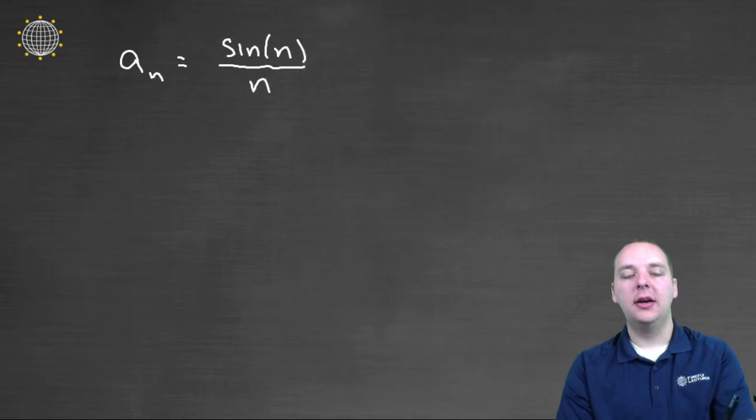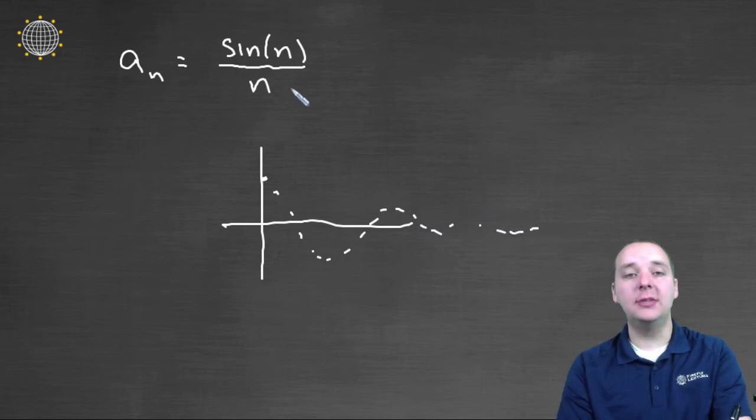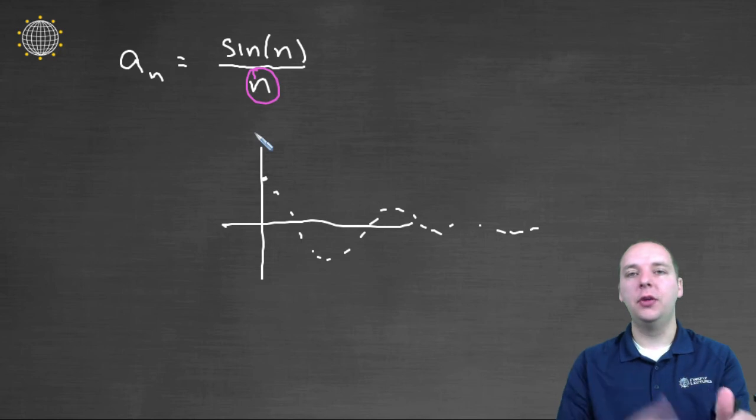If you looked at a graph of this guy, my graph obviously isn't going to be as good as the calculator's, but it basically looks like this. It looks like the sine curve that tapers off to zero. And this makes perfectly good sense. As the n gets larger, sine of n over n gets smaller. It goes to zero. So this idea of graphing with the calculator sequences can be very helpful if you're trying to determine the convergence of a sequence.